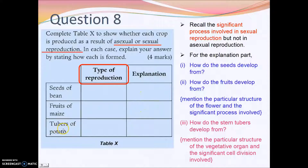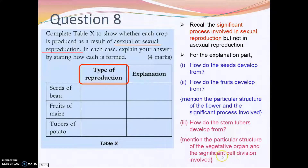For the third part about the potato stem tuber, you need to mention how stem tubers develop and identify the particular structure on the vegetative organ that develops into a whole potato plant again. You also need to state which type of cell division is involved — either mitotic or meiotic cell division — and which part of the vegetative organ allows stem tubers to reproduce.